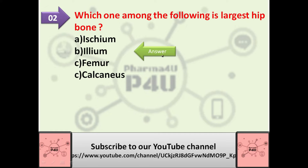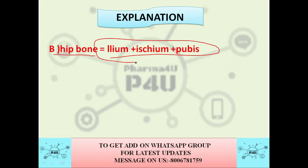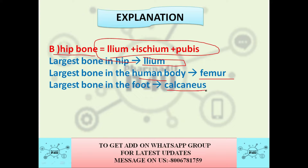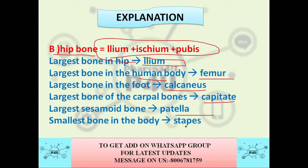In most government exams, basic questions come from this topic. The hip bone consists of ilium, ischium, and pubis, which makes the ilium the largest bone in the hip. The largest bone in the human body is the femur, the largest bone in the foot is the calcaneus, the largest carpal bone is the capitate, the largest sesamoid bone is the patella, and the smallest bone in the body is the stapes.